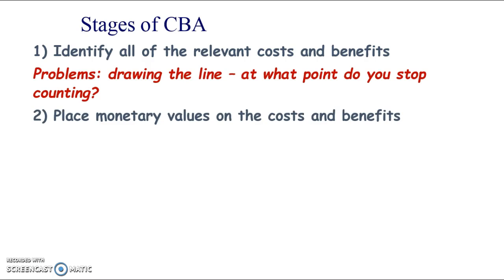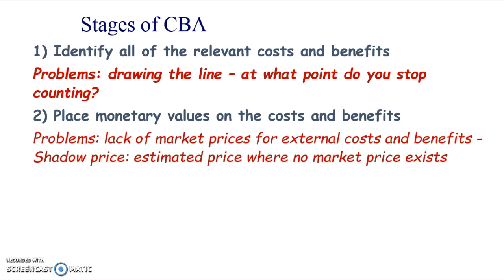Secondly, and I think this is an even harder thing to do, you've got to place monetary values on all the costs and benefits. Some things will be easier: we might be able to estimate the numbers of people taking the service, and it should be easier to estimate the costs of the project — though public sector projects often run over budget. Things like construction costs and revenue are dealt with in money anyway. But the external benefits and external costs often don't have monetary values on them.